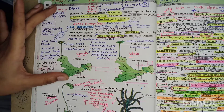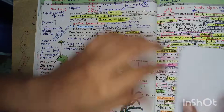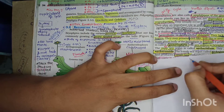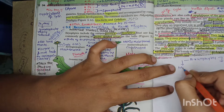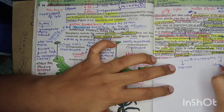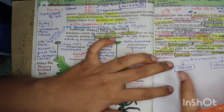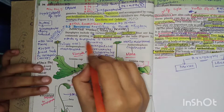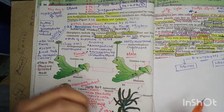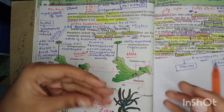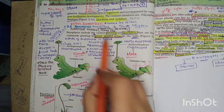Bryophytes include the various mosses and liverworts. These are the classifications of bryophytes. They are mainly grown in the moist shady areas which are present in the hills. We will be seeing them mostly in the hilly areas. Without growing too much height, bryophytes are found near rocks in moist shady areas.